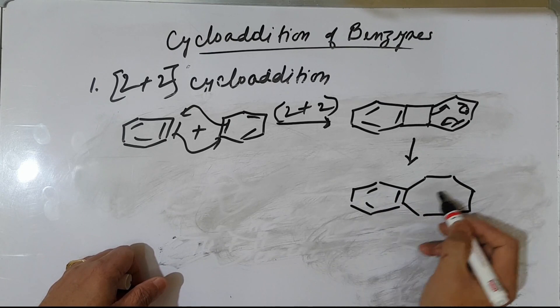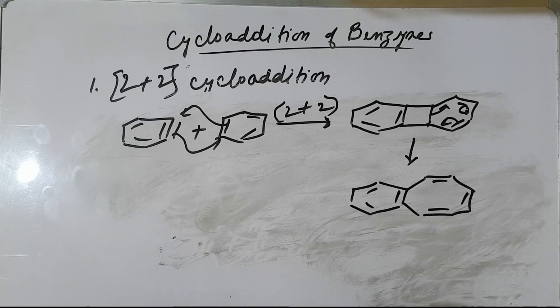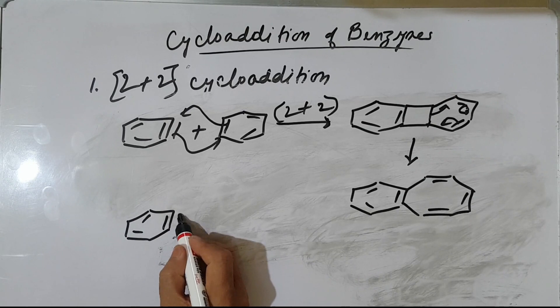When benzyne reacts with benzyne, we get this type of compound. Sometimes the 2+2 adduct can undergo further ring expansion to give a product like this. Another example for ring expansion: benzyne reacts with cyclopropene (CST here) in a 2+2 cycloaddition.